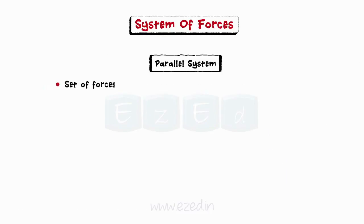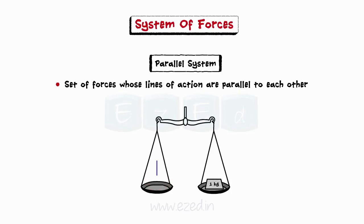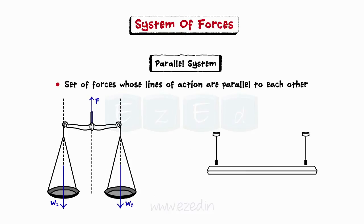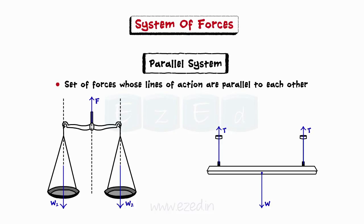A set of forces whose lines of action are parallel to each other form a parallel system. Consider a fruit vendor weighing apples: the weight W1 of fruits, the measured weight W2, and the force F applied by hands to hold the weighing scale — all three forces form a parallel system. Similarly, a tube light suspended from the ceiling by two strings under tension, with the self-weight acting vertically downwards, is an ideal example of a parallel force system.